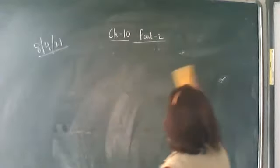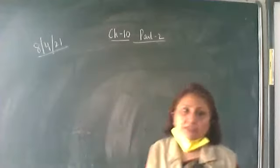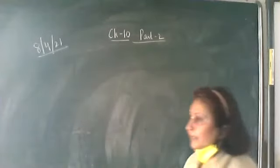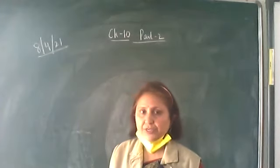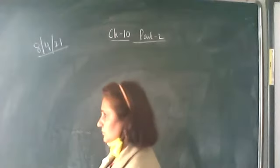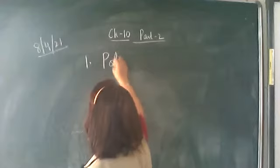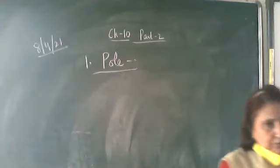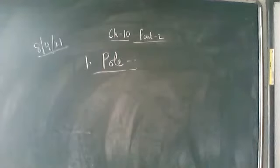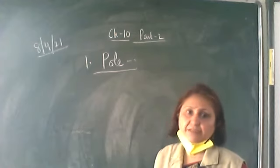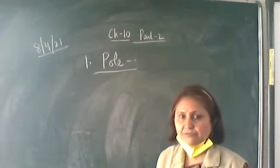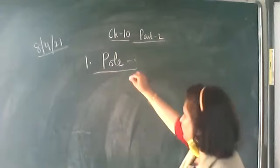Write the next question: Explain the following terms related to spherical mirrors. Write the first one — Pole. Pole is the center point of the reflecting surface of the mirror. Whether it is a concave mirror or a convex mirror, that center point is called the pole of a mirror. This is a concave mirror — this center point we call it as pole, and it is represented by capital P.